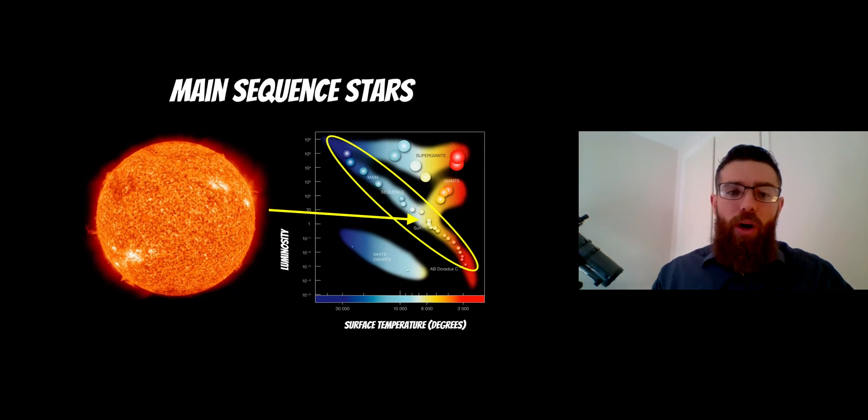And just to recap, on your y-axis is your luminosity so as you get further up on the graph that's how luminous they are, how bright they are, and then their surface temperature is along the bottom.